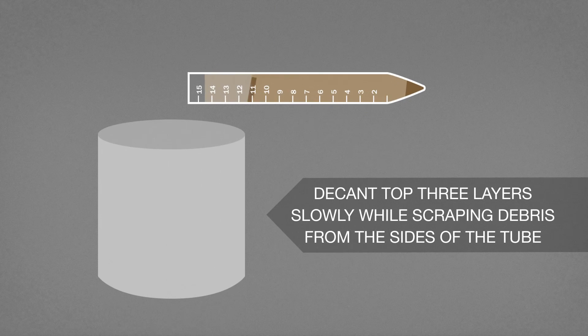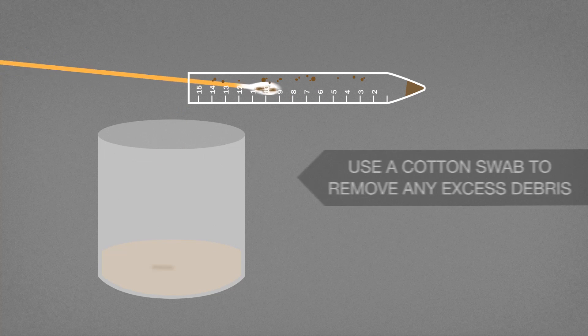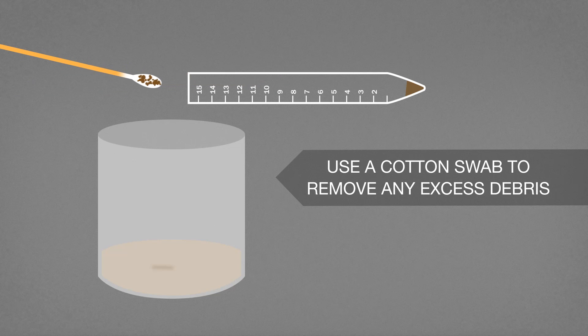Decant the top three layers slowly into an appropriate waste container while scraping debris from the sides of the tube with an applicator stick. Use a cotton swab to remove any excess debris.